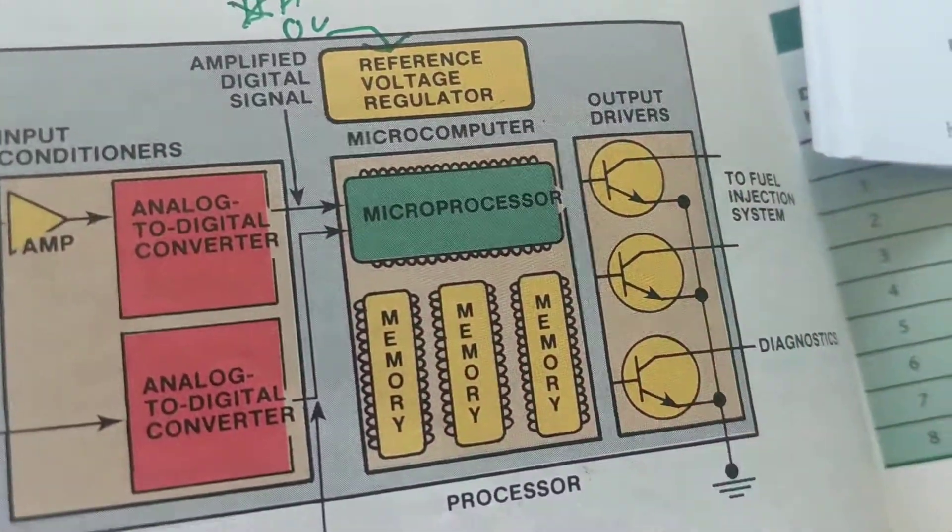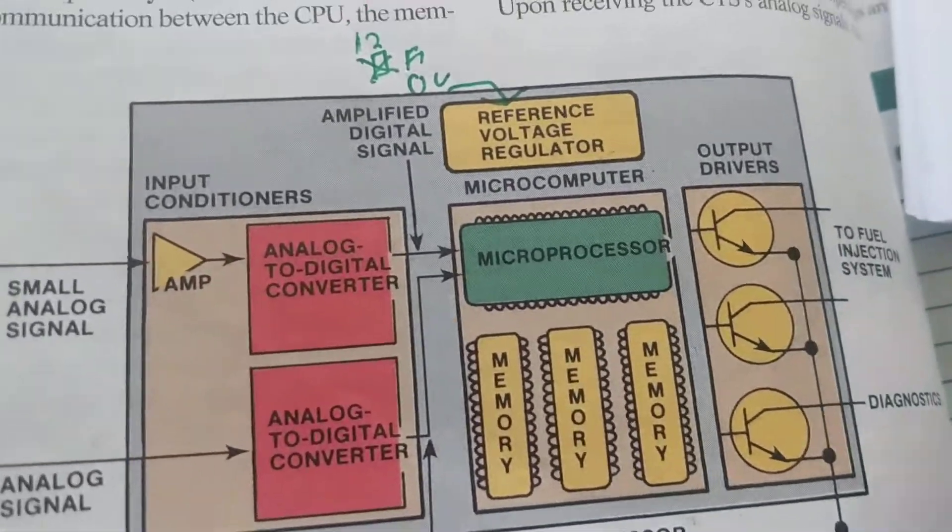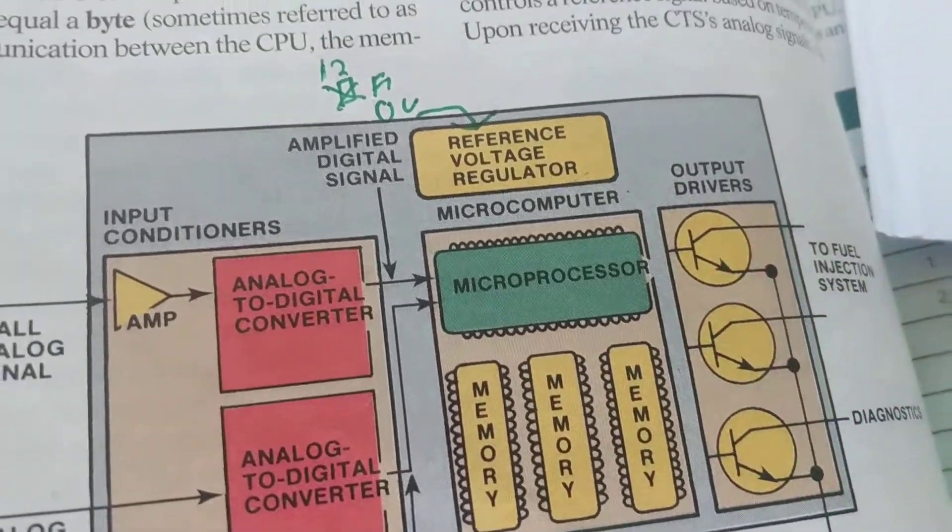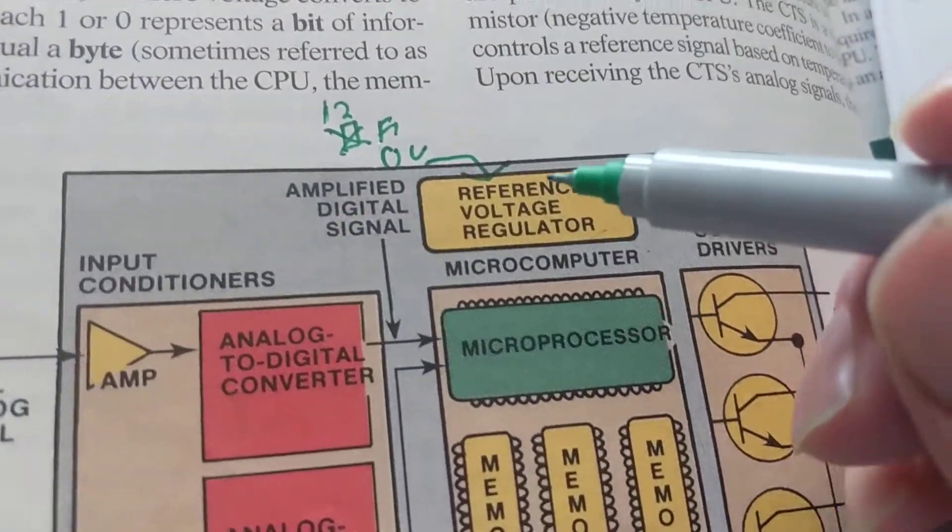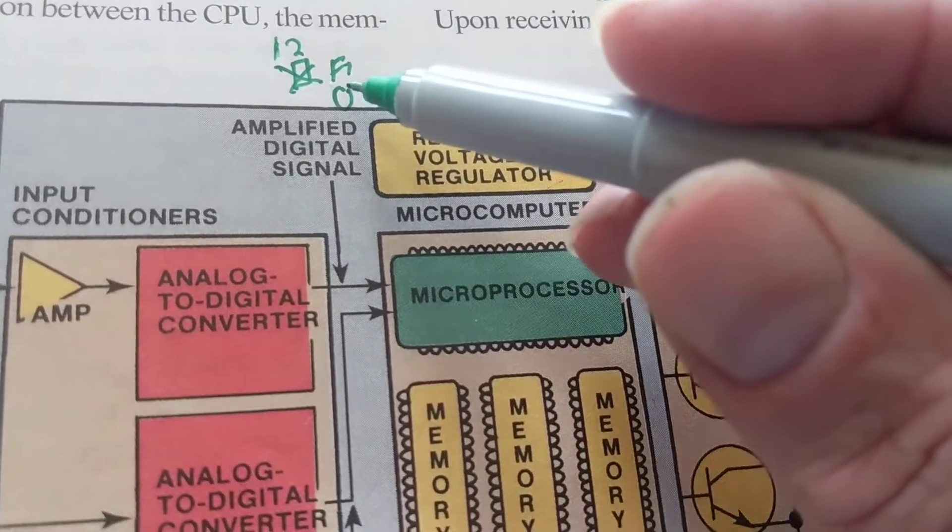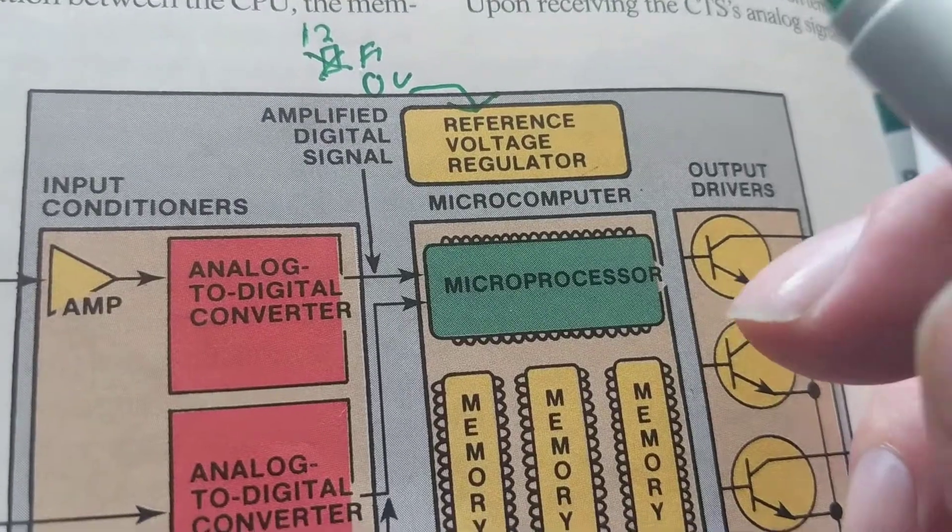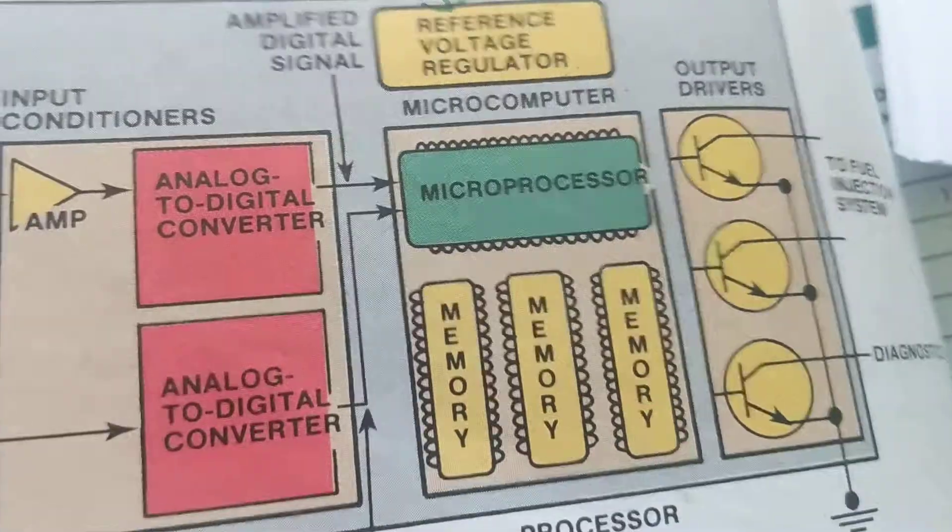How much volts do you think the microprocessor needs? Remember, we lost the 12 volts. We don't have any communications. Car doesn't start. That's the problem. The microprocessor, the one I just showed you on the printed circuit board, does not get 12 volts. That is too high of a voltage.